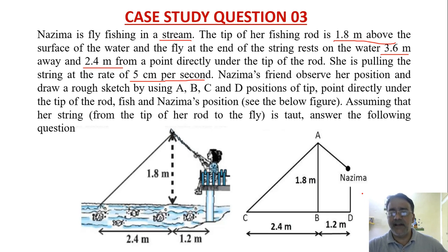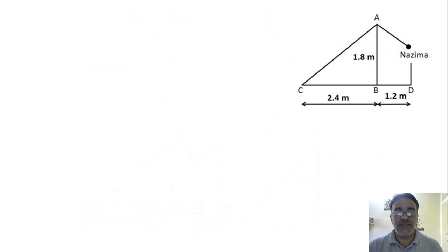Tip, point directly under the tip of the rod, fish and Nazima's position. See this figure. Assuming that her string from the tip of her rod to the fly is taut, answer the following question. So let us see the first question. What is the length AC?